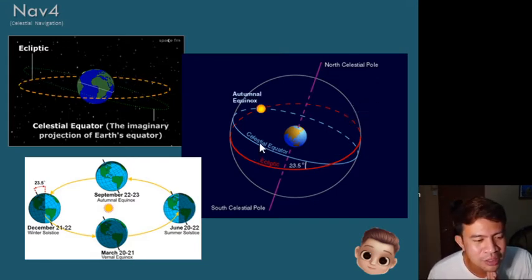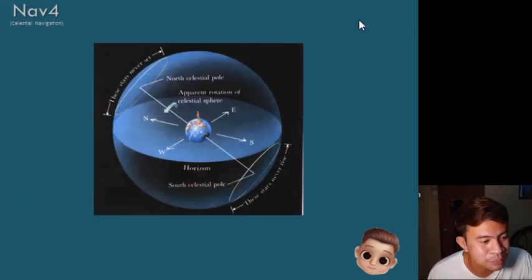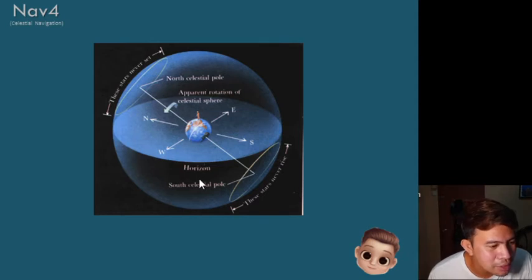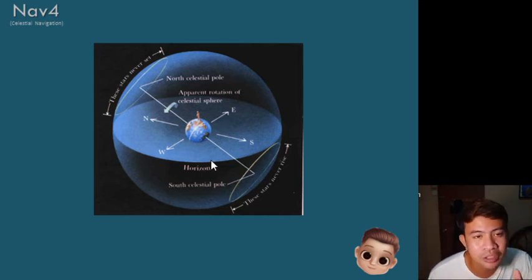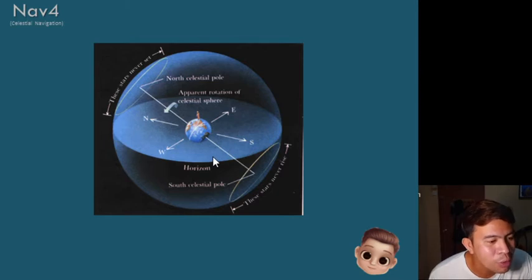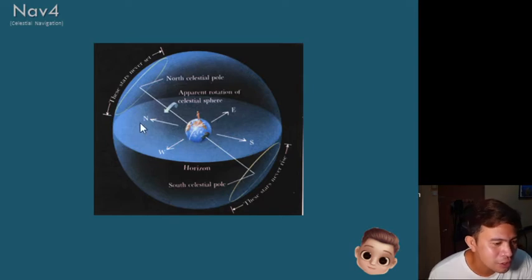In some sources, the definition of the celestial equator and the equinoctial is the same. Here is another illustration of how the celestial sphere is perceived by an observer from the Earth, showing how the celestial sphere appears to turn.